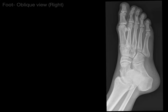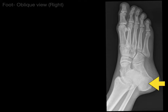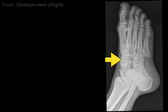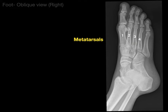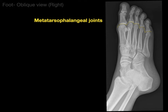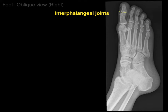Now let's do the foot from an oblique view, where the foot is rotated 30 to 40 degrees and the x-ray goes through the dorsal to the plantar surface. There we have our tibia and fibula. This view shows the calcaneus really nicely, and there is our talus and navicular. There is the cuboid with our medial, intermediate, and lateral cuneiform bones. Metatarsals 1 through 5 are shown, and phalanges 1 through 5 as well, with metatarsophalangeal joints, the interphalangeal joint in the great toe, and proximal and distal interphalangeal joints in the lesser toes.